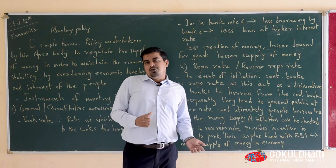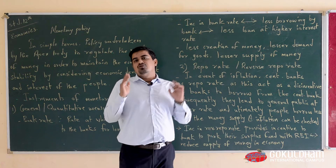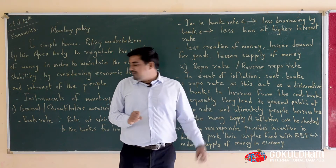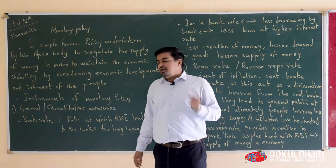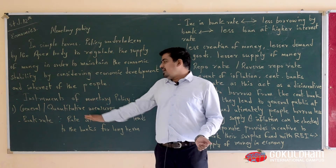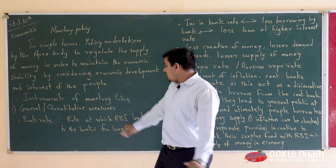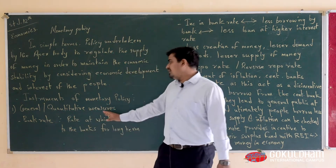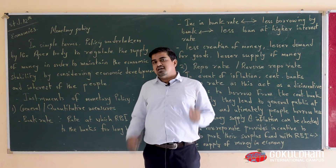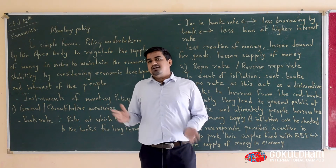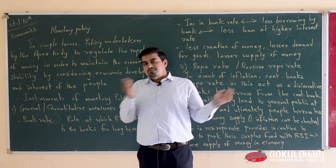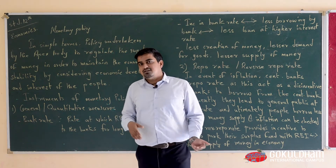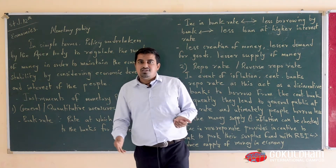There are some instruments that can be utilized to control the credit creation or supply of money in the economy. These instruments are of two types: quantitative measures and qualitative measures. First we will understand quantitative measures. Quantitative measures are those which affect the entire economy by general and common ways, so quantitative measures can also be called general measures of monetary policy.